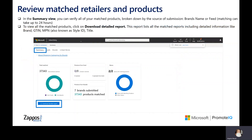After 24 hours, head back to the Summary tab on the Shopping for Brands page. Download the detailed report to see what products matched. This report will also show you how each product is categorized in the product feed.